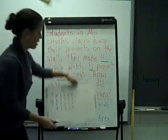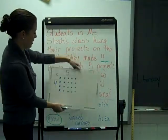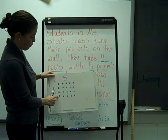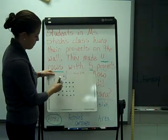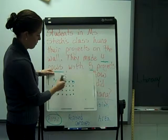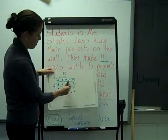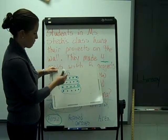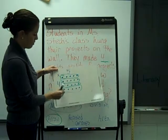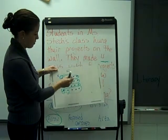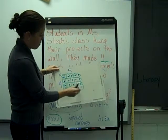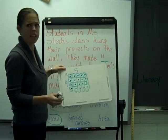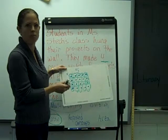This array can be represented like this. I have 4 rows — 1, 2, 3, 4 rows that go this way. And then there are 5 in each row: 3, 4, 5. That can also be considered 5 columns.